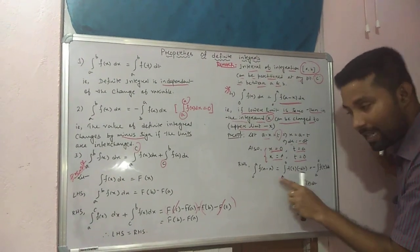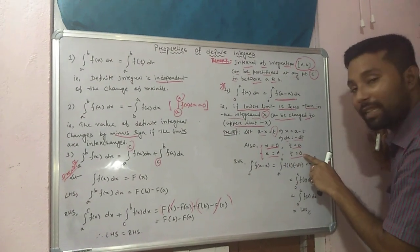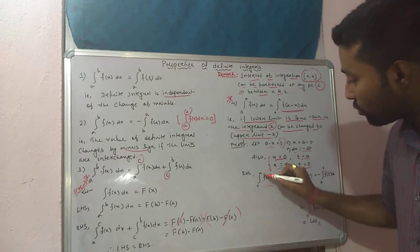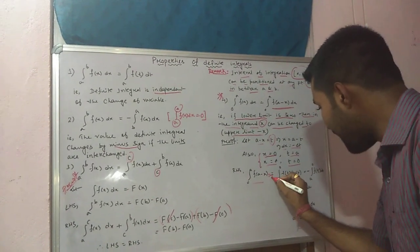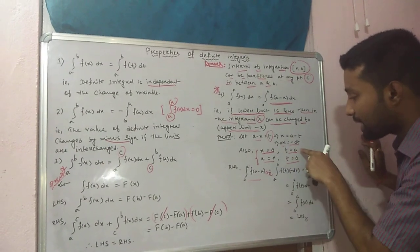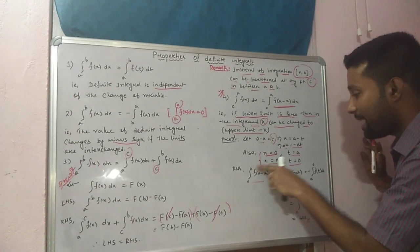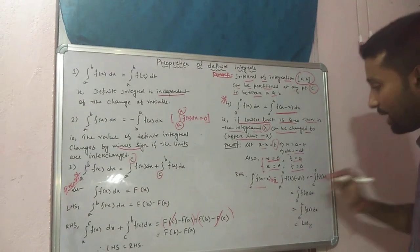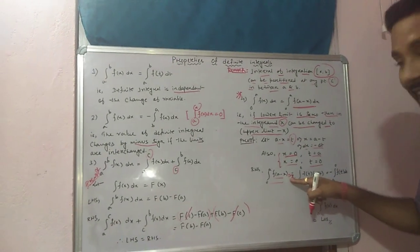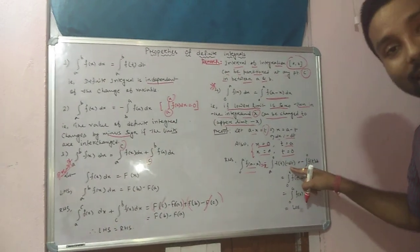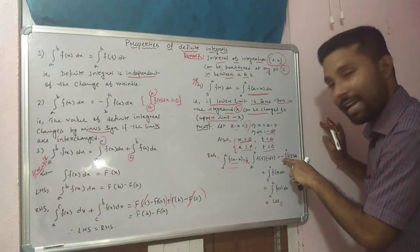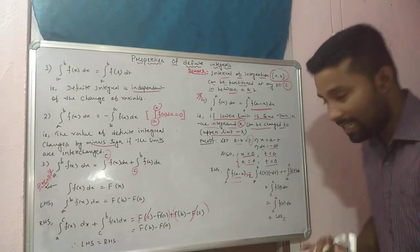So starting from the right hand side, integration 0 to a of f(a minus x) dx. We replace the lower limit 0 by a (because putting x = 0 gave t = a) and replace the upper limit a by 0 (because putting x = a gave t = 0). Then f(a minus x) becomes f(t), and dx becomes minus dt. Taking the minus sign outside: minus integration a to 0 of f(t) dt.